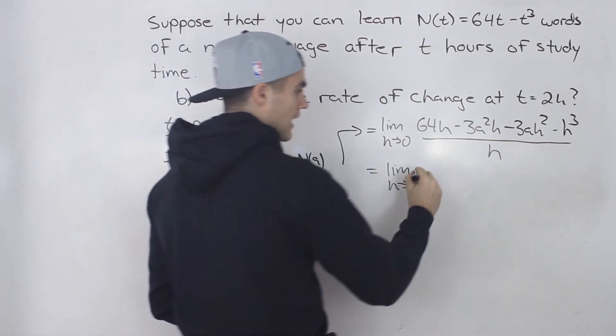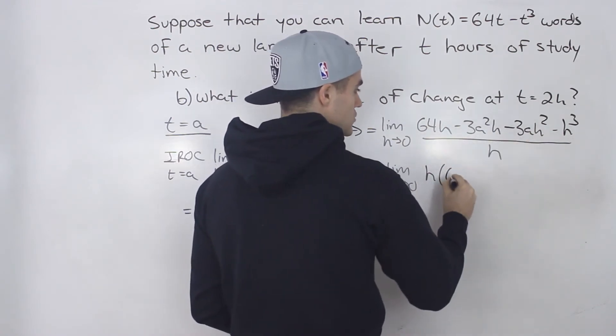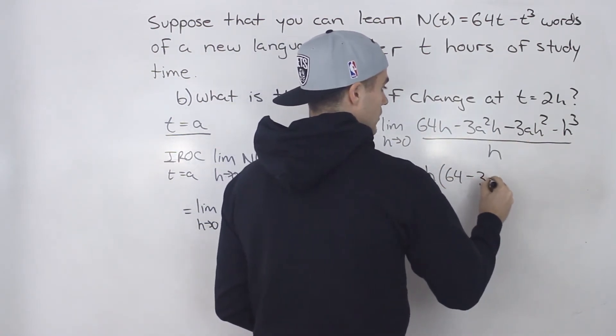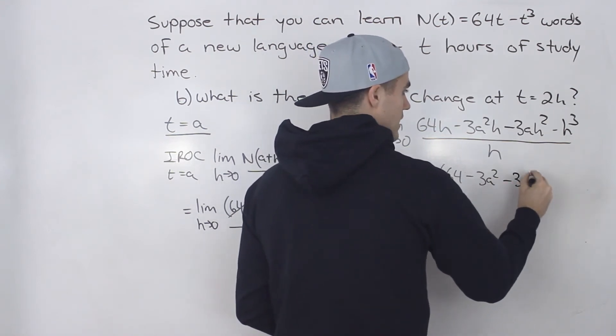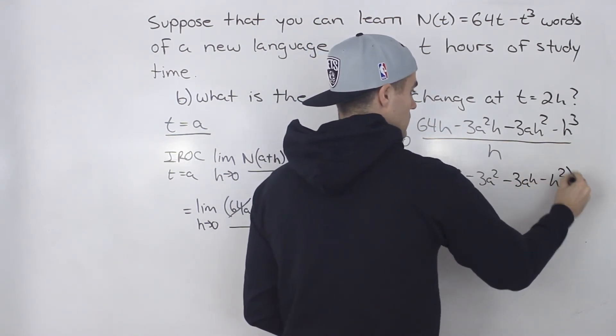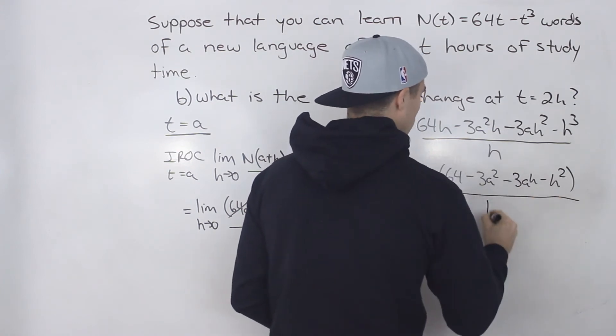Notice we can factor out an h from all of the terms in the numerator. So we'll have h times (64 minus 3a squared minus 3ah minus h squared). It's going to be all over h.